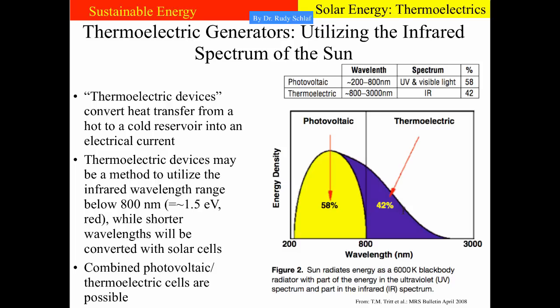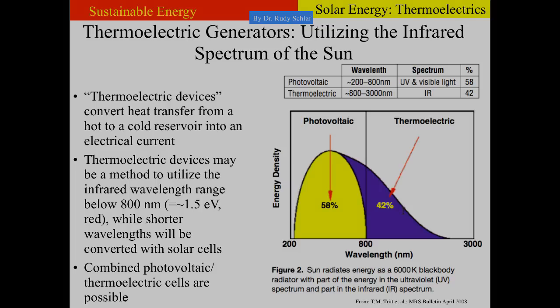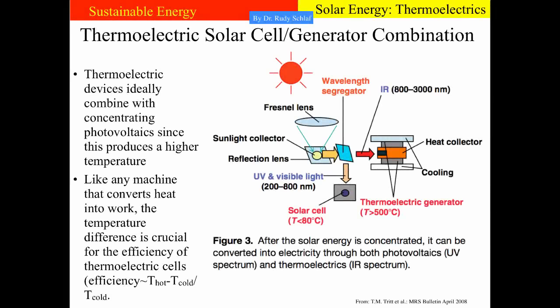There is a push to combine photovoltaic and thermoelectric cells into one device to capture the energy in the entire spectrum. Here is a schematic of the general concept of such a combination. The sunlight is focused with a lens and then the wavelengths are separated. We pass the infrared light to the thermoelectric generator and the visible and UV light to a solar cell.